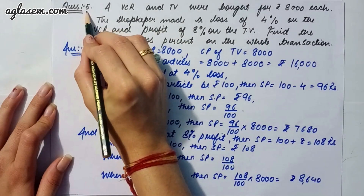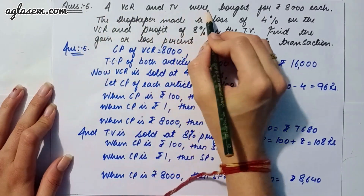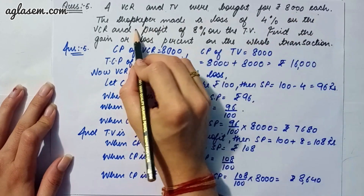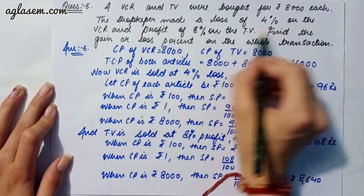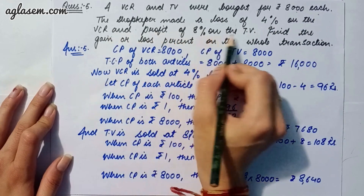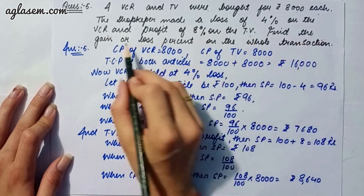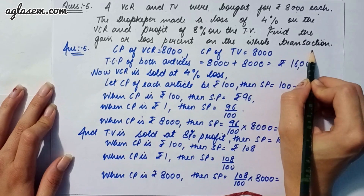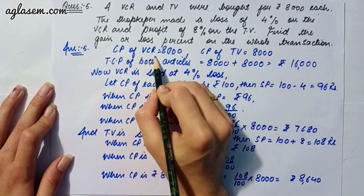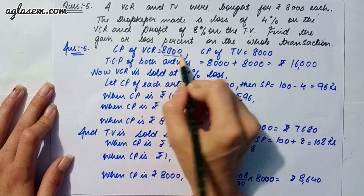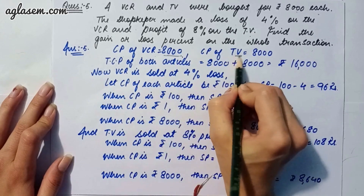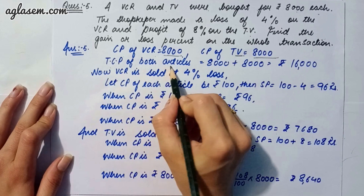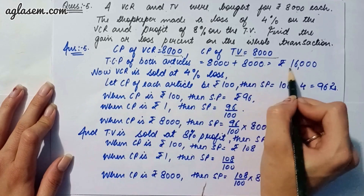Moving to our fifth question: a VCR and a TV were bought for rupees 8000 each. The shopkeeper made a loss of 4 percent on the VCR and a profit of 8 percent on the TV. We have to find the gain or loss percent on the whole transaction. Cost price of VCR is 8000 and cost price of TV is 8000, so total cost price is rupees 16000.